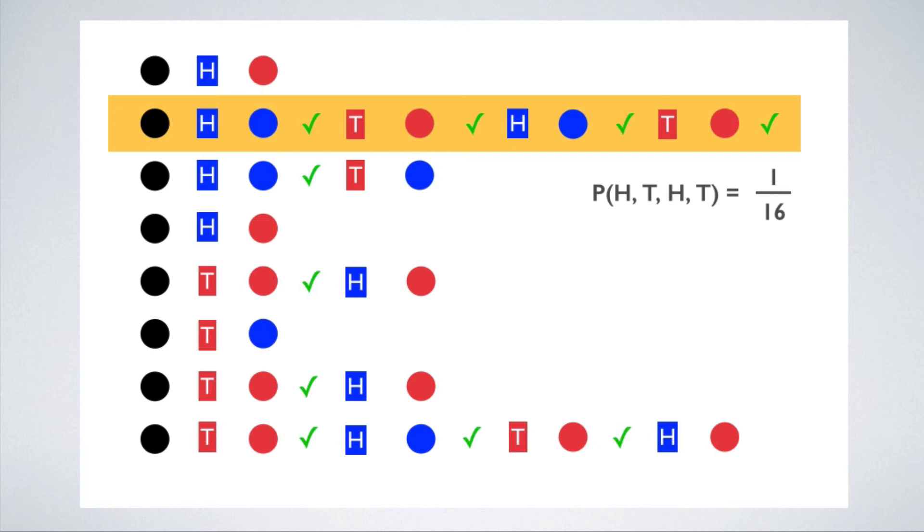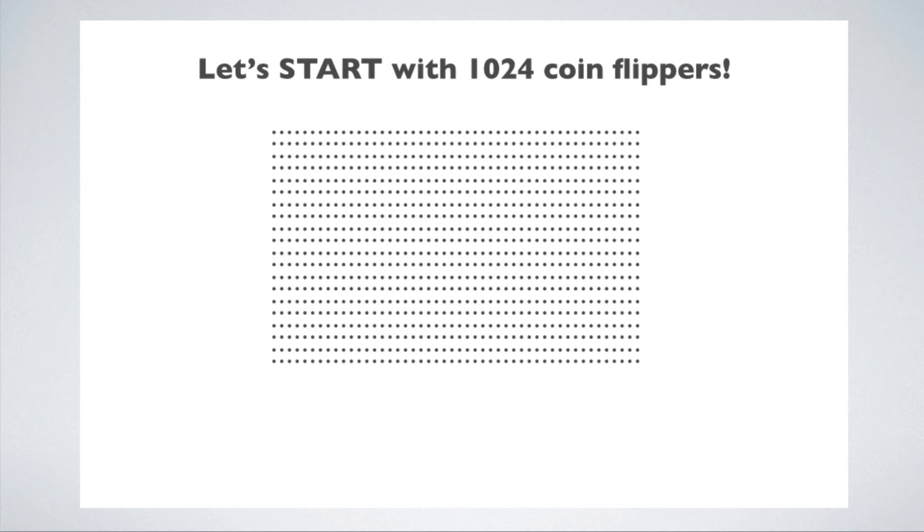Now how can you predict a sequence of ten coin tosses? It's easy. You just start with more coin flippers. Specifically, let's start with 1024 coin flippers. Each of those dots is a coin flipper. I randomly assign a prediction to each one, and eliminate the ones who failed to match my prediction.